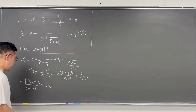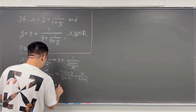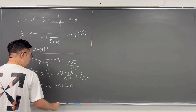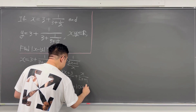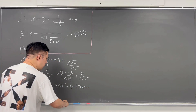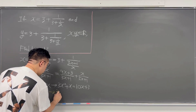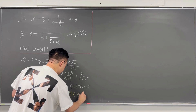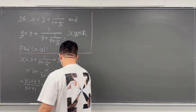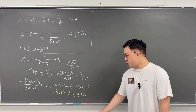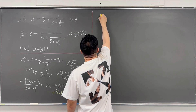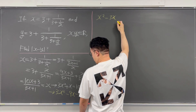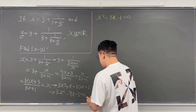If you multiply 3x plus 1 to both sides, then we have 3x squared plus x, and that has to be equal to 10x plus 3. Rearranging gives the quadratic equation: 3x squared minus 9x minus 3 equals 0. Dividing all terms by 3, we get x squared minus 3x minus 1 equals 0.